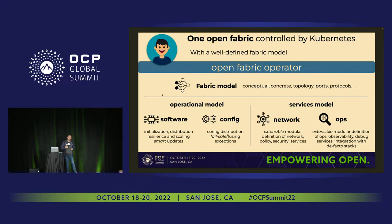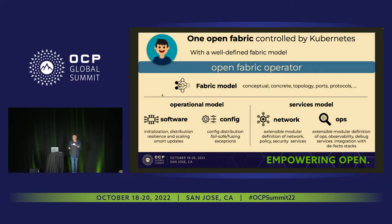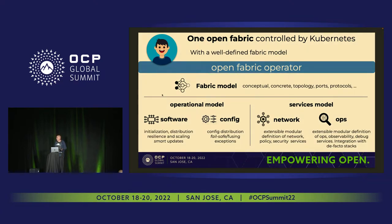Because of Kubernetes, being able to deploy and use standard Kubernetes tools like Prometheus and Fluentd — as previous people pointed out — distributing, installing, and configuring those things is actually fairly trivial because people know how to do that. And this becomes part of the fabric.